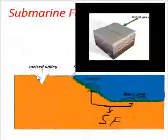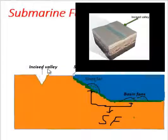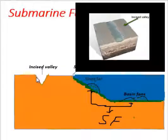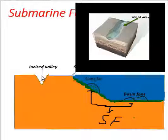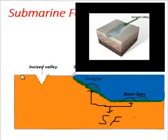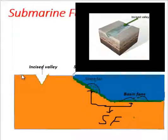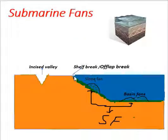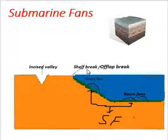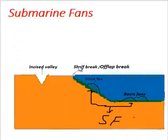Incised wheelie is a V-shaped wheelie formed by river erosion when sea level falls below shelf break or a flat break.